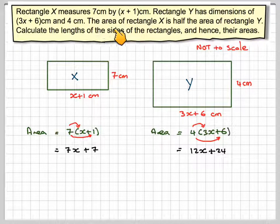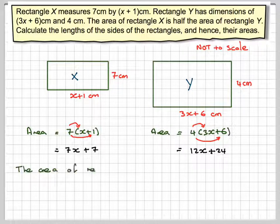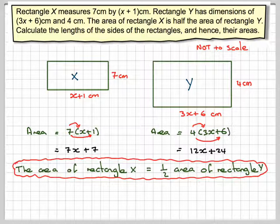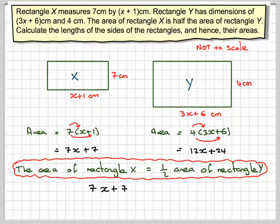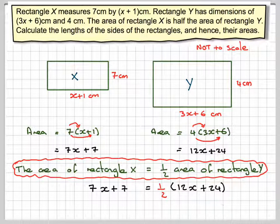Now it says here that the area of X is half the area of Y. Therefore the area of Rectangle X is half the area of Rectangle Y. Very important. Therefore 7x + 7, which is the area of Rectangle X, is going to be a half times the area of this one which is 12x + 24.